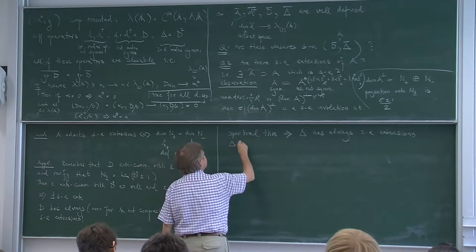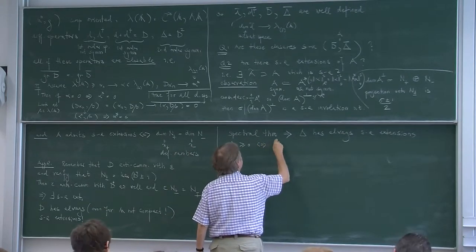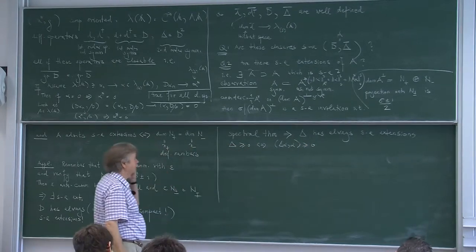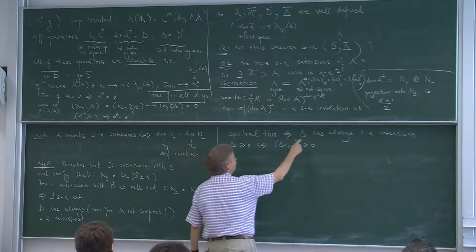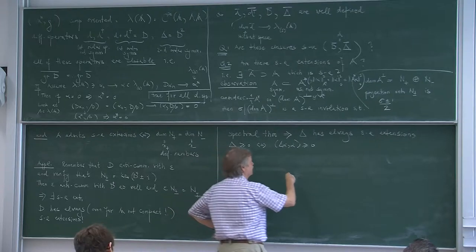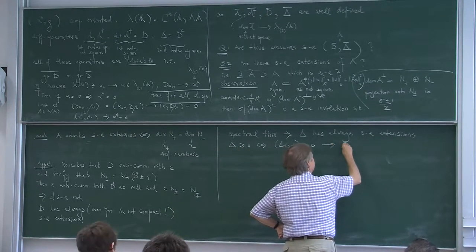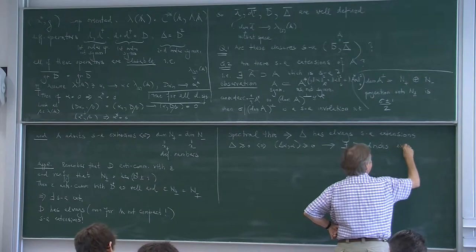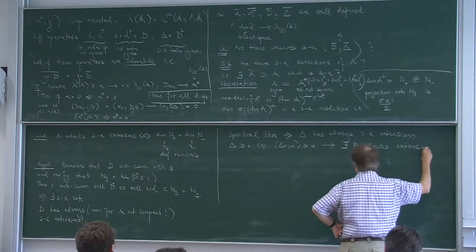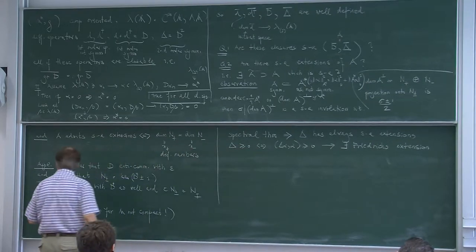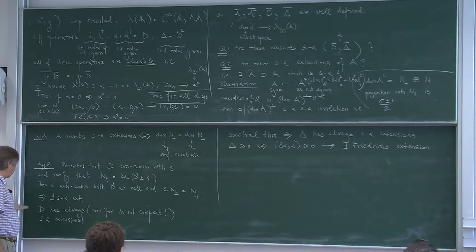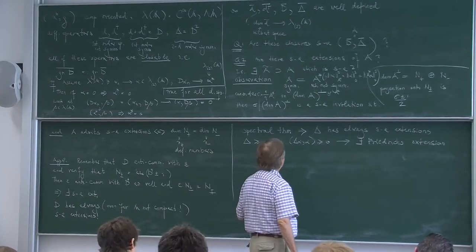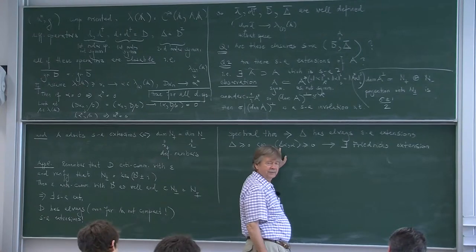The spectral theorem implies that delta always has self-adjoint extensions under all conditions. But of course there may be several, which is very unpleasant for a physicist, because this means he has to make a choice — a choice he was not aware of, so some information is missing which distinguishes between the self-adjoint extensions. We also have that delta is greater or equal to zero, meaning ⟨delta alpha, alpha⟩ ≥ 0, which is easily derived from the fact that this is D squared. In this case there is a special extension, the so-called Friedrichs extension.